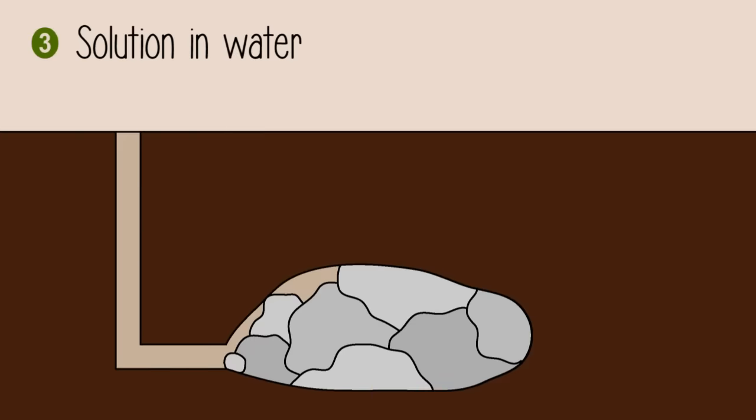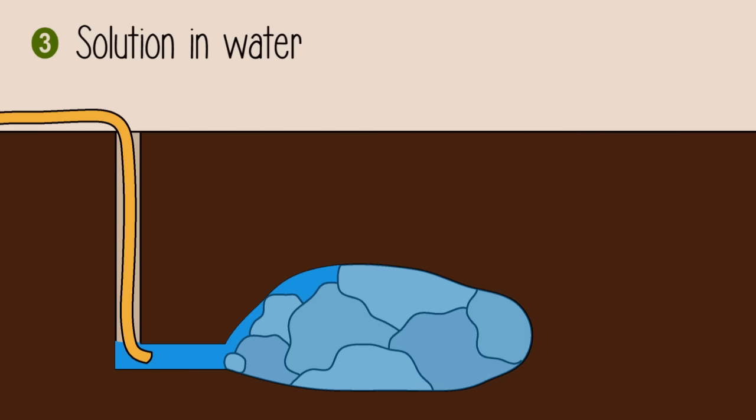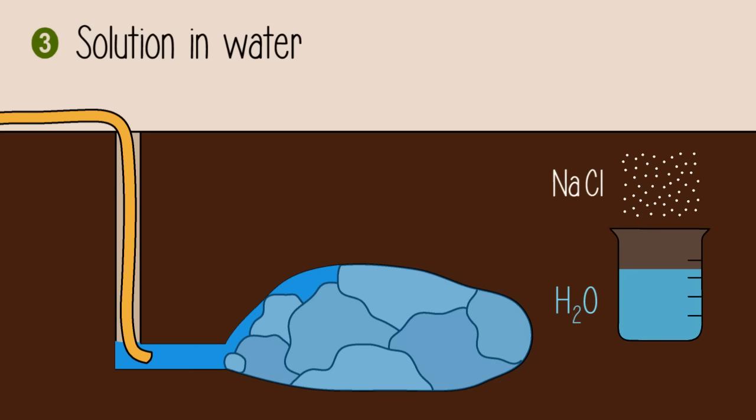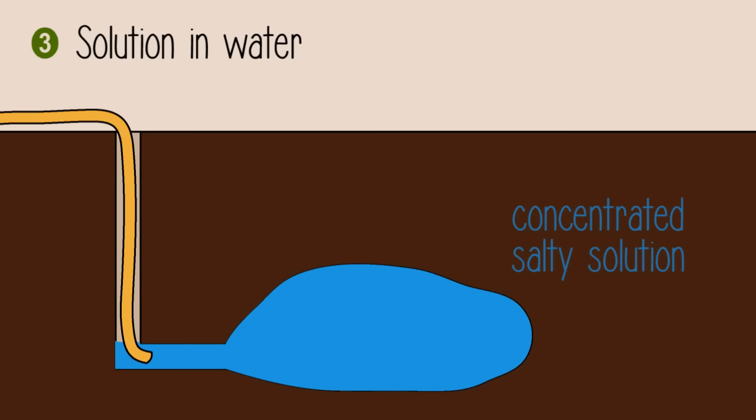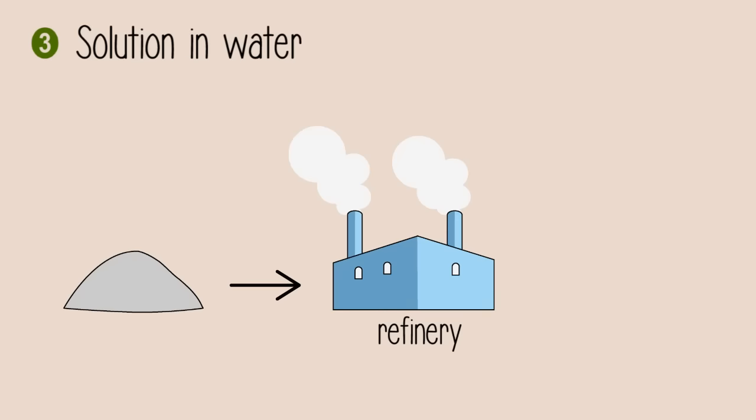Another method to mine salt is to pump water into these underground salt deposits. As you may already know, sodium chloride is soluble in water. The salt dissolves in water to form a concentrated salty solution, which is then pumped back up to the surface and purified on an industrial scale.